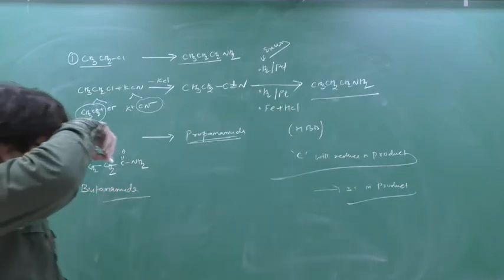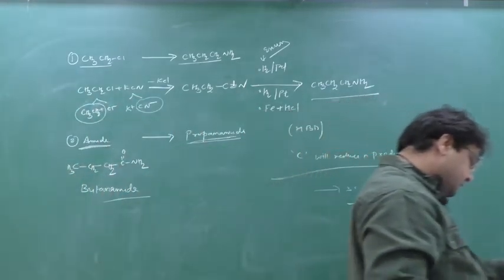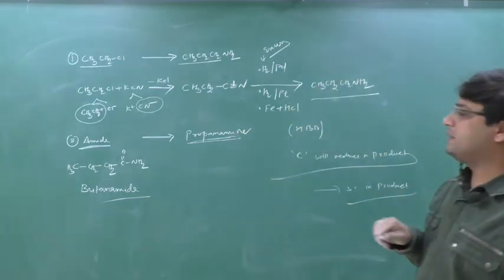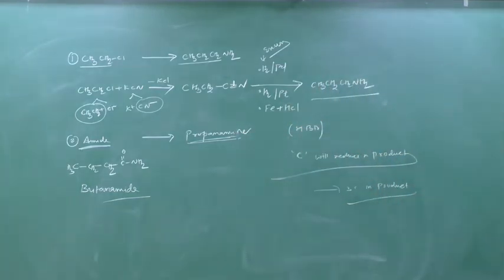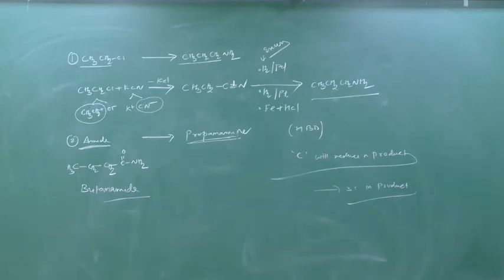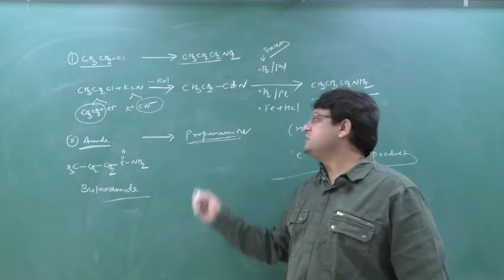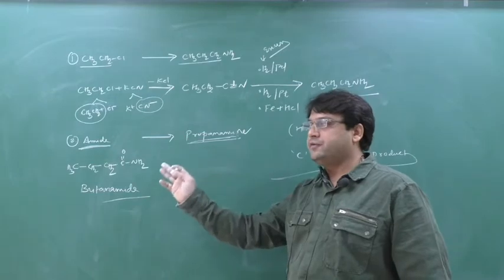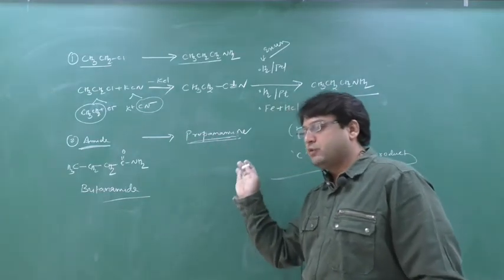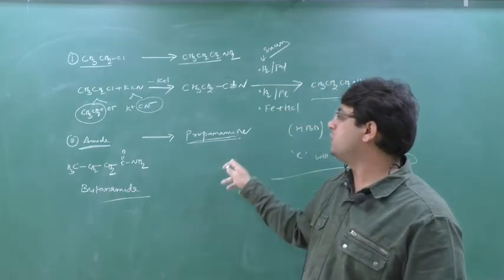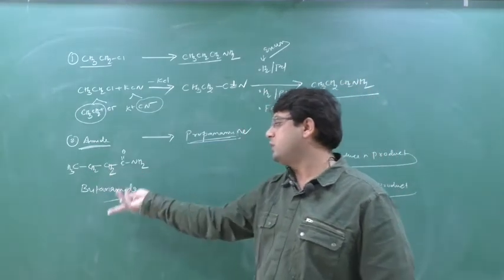Hofmann Bromamide Degradation says: going from reactant to product, one carbon should reduce. Here product is propanamide (3 carbons), so reactant must have 4 carbons — butanamide. Going from product back to reactant, one carbon should increase. So here 3 carbon (propane), reactant must be 4 carbon (butane), hence butanamide.